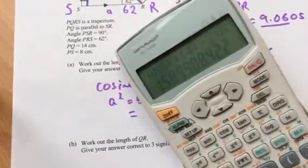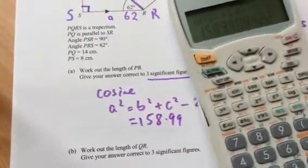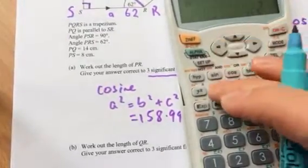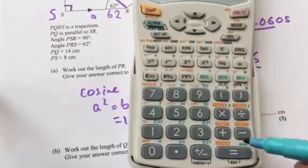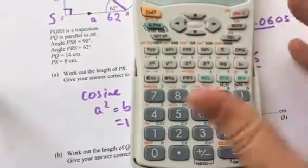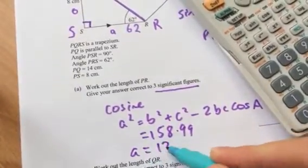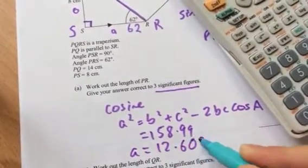Now I'm going to get an answer of 158.99. And remember that's the squared answer, so I need to take the square root of the answer, which gives an answer of 12.609.